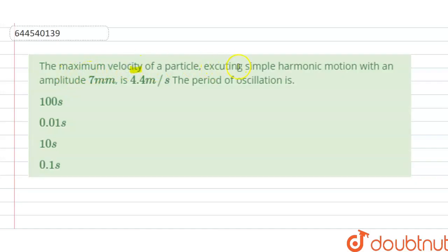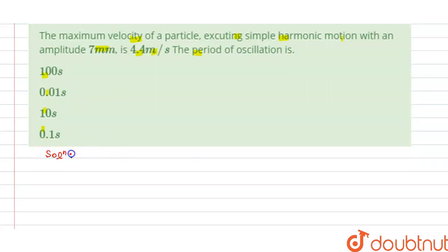The maximum velocity of a particle executing simple harmonic motion with an amplitude 7 mm is 4.4 meters per second. The period of oscillation is... ABCD options are given here, so we have to find the correct option.